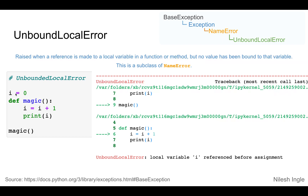For example, here we have set the value of i equal to zero, and then we have this function magic. What it does is it adds one to the value of i and then it prints the value of i. But when we call this function, it's going to raise the UnboundLocalError because we have never defined what value of i should be inside of the function. Inside of the function, it's not able to access the value of i to add the one to it.